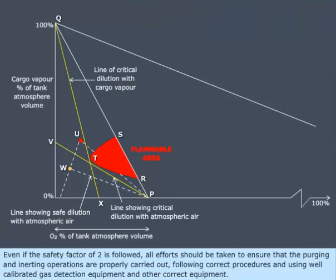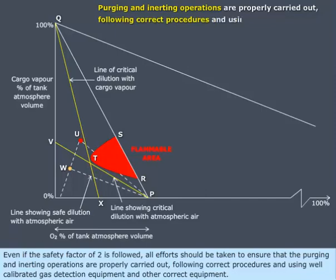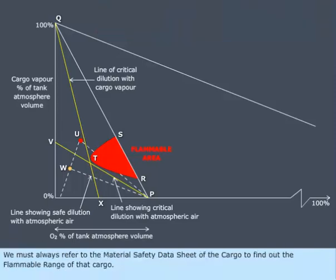Even if the safety factor of 2 is followed, all efforts should be taken to ensure that the purging and inerting operations are properly carried out, following correct procedures and using well-calibrated gas detection equipment and other correct equipment. We must always refer to the material safety datasheet of the cargo to find out the flammable range of that cargo.